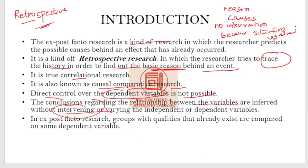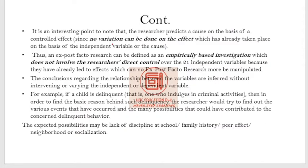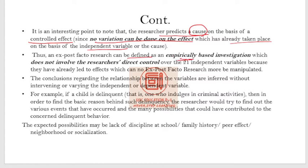Because the situation has already occurred, intervention is not possible — there is no question of it. In ex post facto research, the groups with qualities that already exist are compared on some dependent variable. The researcher predicts a cause on the basis of a controlled effect, where no variation can be done on the effect which has already taken place, on the basis of the independent variable.